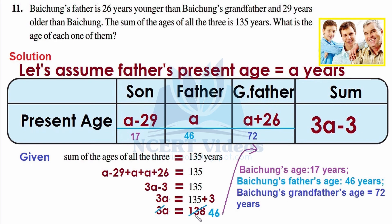Now we check divisibility: is 138 divisible by 3? Adding digits: 1 + 3 + 8 = 12, which is divisible by 3, so yes. Dividing 138 by 3 gives 46. So a = 46, and since we assumed 'a' to be Baichung's father's age, his present age is 46 years.